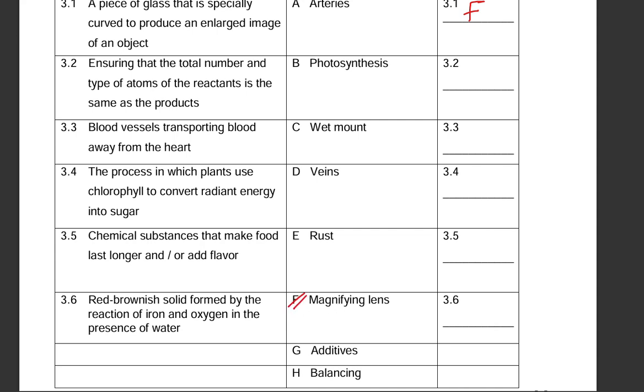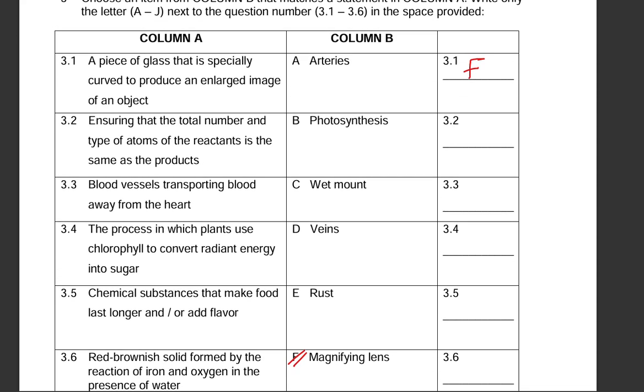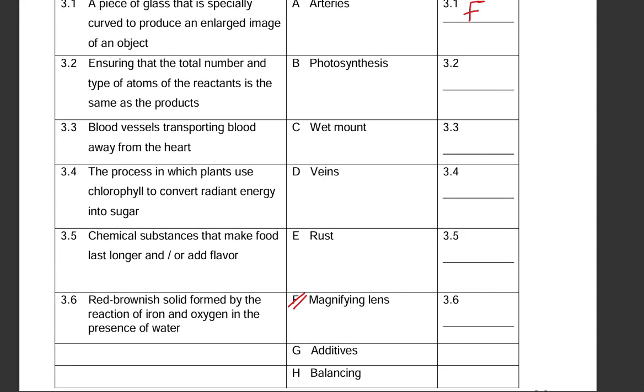Let us cross it out. 3.2: ensuring that the total number and type of atoms of the reactants is the same as the product. We are balancing the chemical equation. So that is H, balancing. 3.3: blood vessels transporting blood away from the heart. Arteries, so there, A.